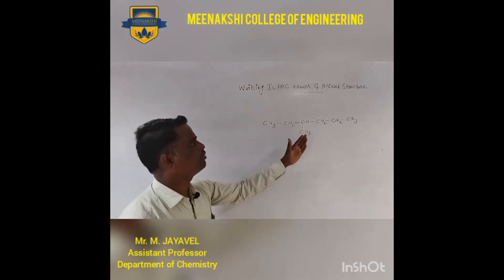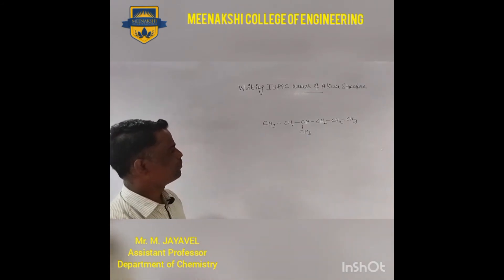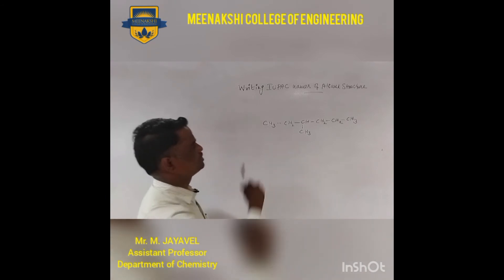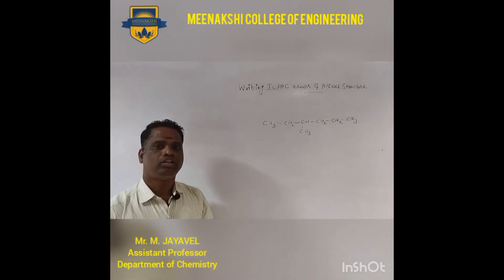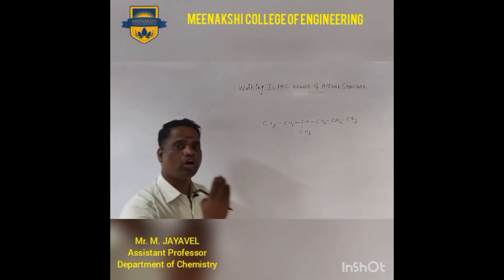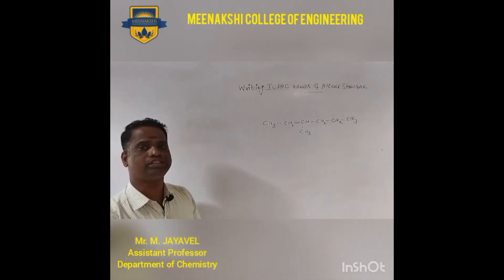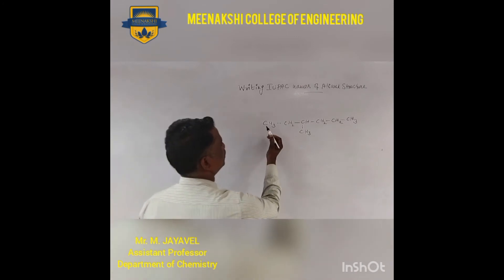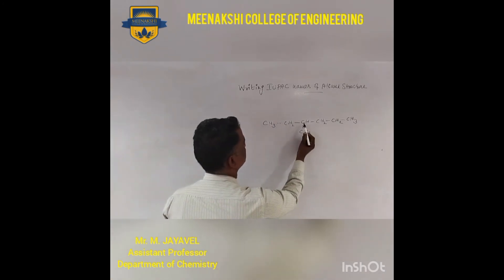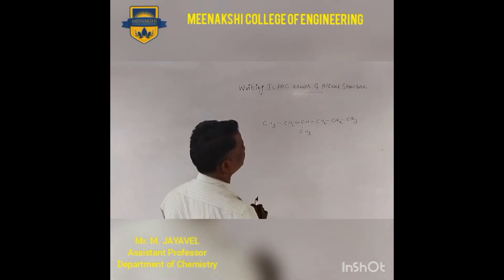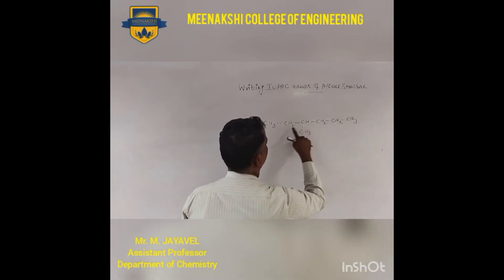Now, writing the IUPAC name of a given alkane structure. When you write the IUPAC name, keep in mind: you must find out the longest continuous parent chain. Now, you have to give the number — 1, 2, 3, 4, 5, 6. Or you can start from the other side: 1, 2, 3, 4, 5, 6.